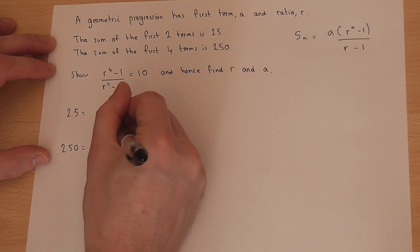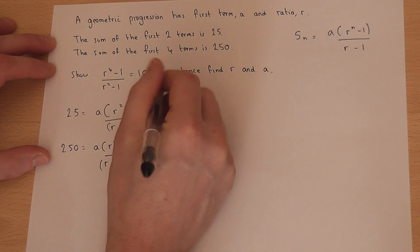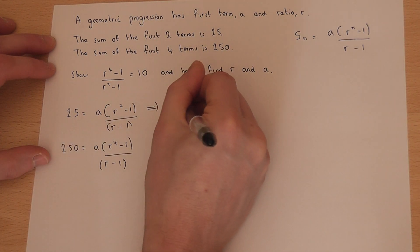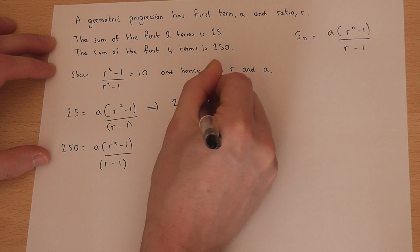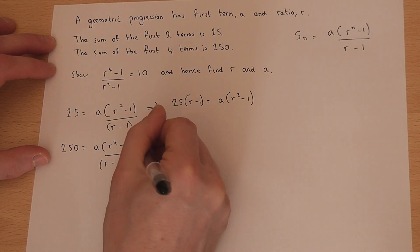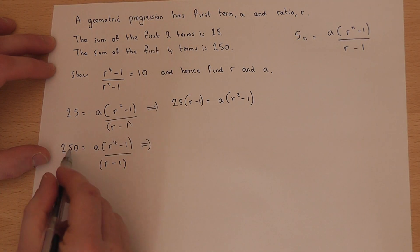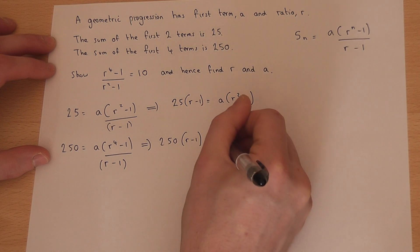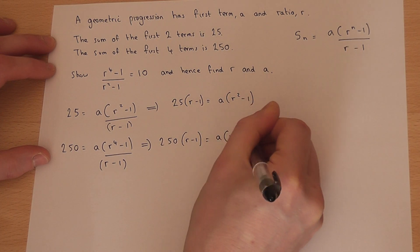Now if I put brackets around the bottom of both fractions, I'm going to multiply by (r - 1). So 25(r - 1) = a(r² - 1). Second one, times by (r - 1), 250(r - 1) = a(r⁴ - 1).